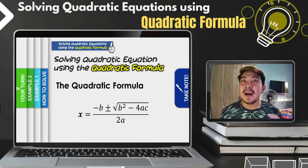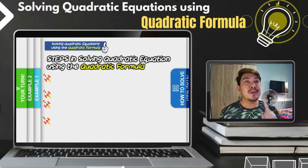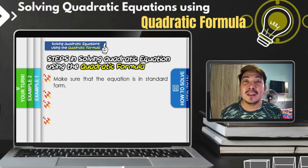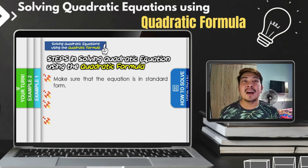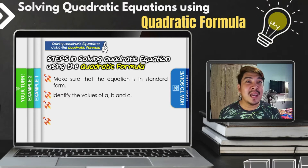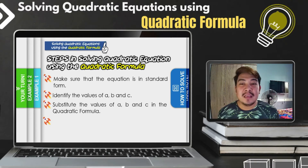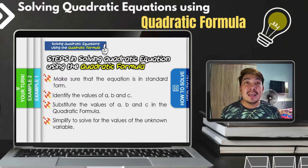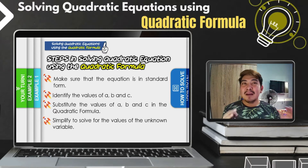There are four steps for solving quadratic equations using the quadratic formula. Step one: make sure the equation is in standard form, ax squared plus bx plus c equals zero. Step two: identify the values of a, b, and c. Step three: substitute those values into the quadratic formula. Step four: simplify the equation to get the values of the unknown variable.